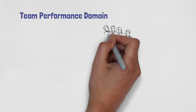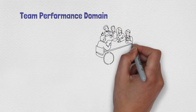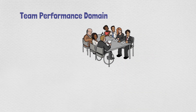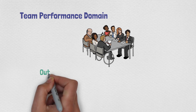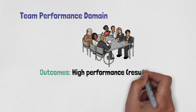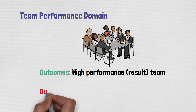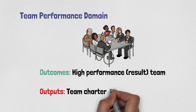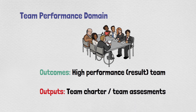The Team performance domain includes fostering team development, encouraging leadership behaviors from all project team members, and sharing ownership for outcomes. The outcome is a high-performance team. The outputs from PMBOK 6 under resources were the team charter and team assessment.